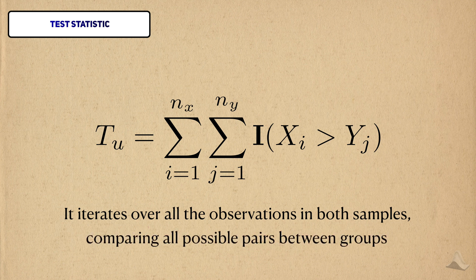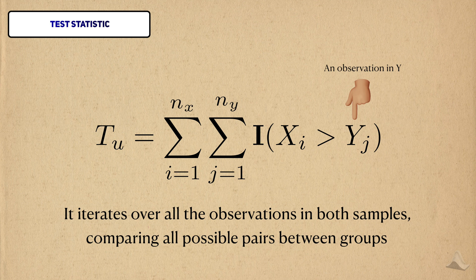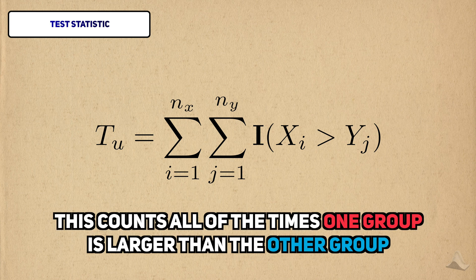This is a double sum, and it iterates over all the indices in both samples. What's happening here is that each observation in x is being compared to each observation in y. If it's greater, then this indicator value is 1, and thus increments the value of the statistic. In essence, we're counting the number of times that a value of x is greater than a value from y.